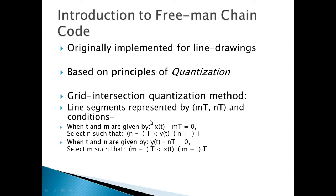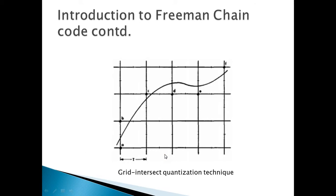In this method, the curves are traced end to end and the nodes are selected according to the following rule: where t and m are given by this expression, n is selected to satisfy this condition; and where t and n are given by this expression, m is selected to satisfy this condition. Thus, we can see a representation of the grid intersection quantization technique — this is the path to be traced, and this is the imposed grid.